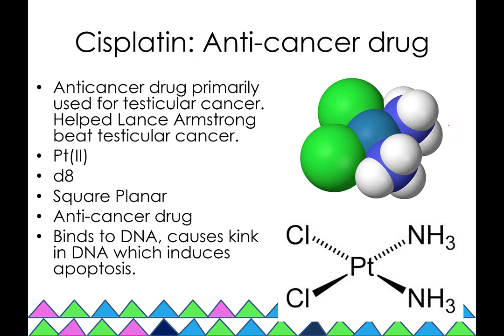Let's segue to cisplatin. Cisplatin is an anti-cancer drug primarily used for testicular cancer — for example, Lance Armstrong used cisplatin to beat testicular cancer. This is also a coordination compound; we've seen it before when discussing geometric isomers. It's specifically the cis isomer. Platinum 2+ is D8 square planar.